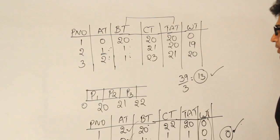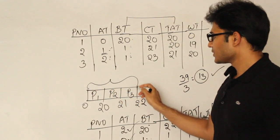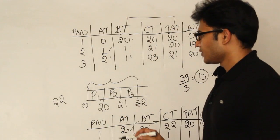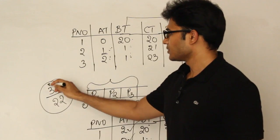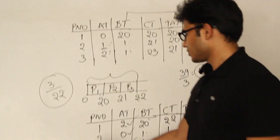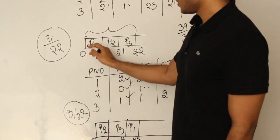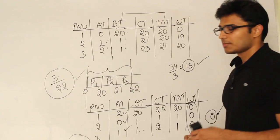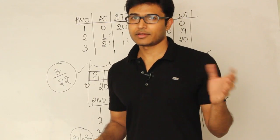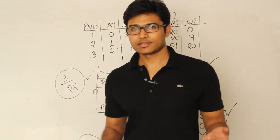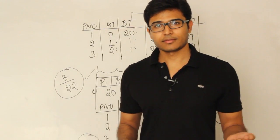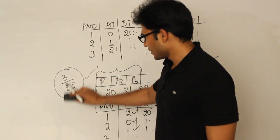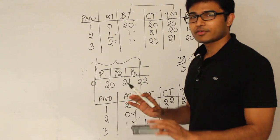Throughput is the number of processes that get finished per unit time. Here the total time taken is 22 units, in which I finish 3 processes, so throughput is 3/22. In both examples the throughput is 3/22. Comparing SJF with FCFS, SJF gives the best throughput possible because all processes finish very fast. I'll prove this point with examples later — don't worry about throughput for now.